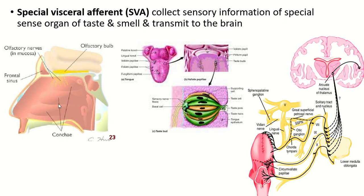The special visceral afferent. The smell sensation is collected by the olfactory nerve, and the taste sensation is collected by the facial nerve, glossopharyngeal nerve and vagus nerve. So this fiber is known as the special visceral afferent fiber.